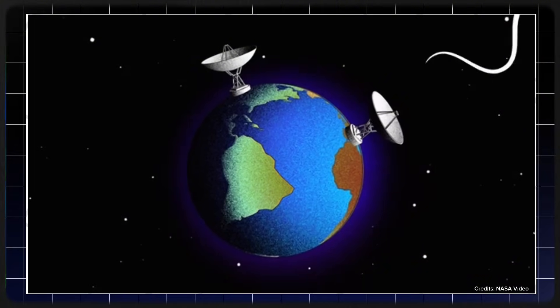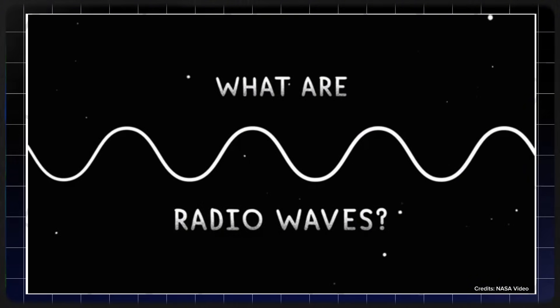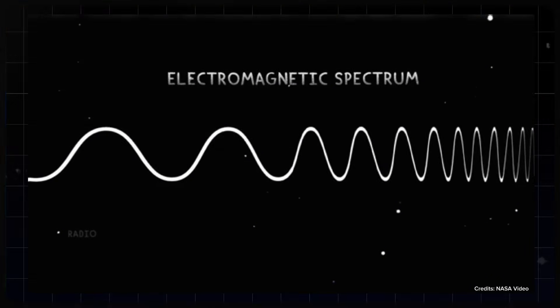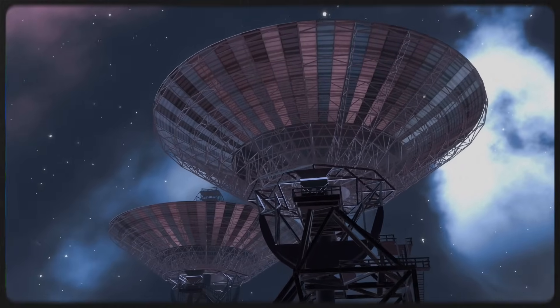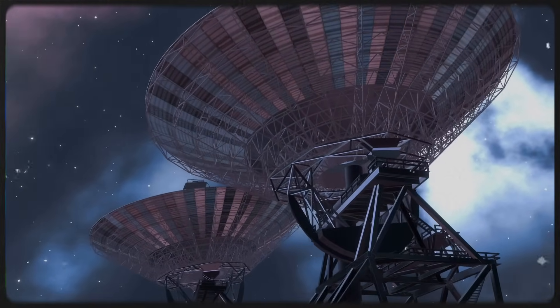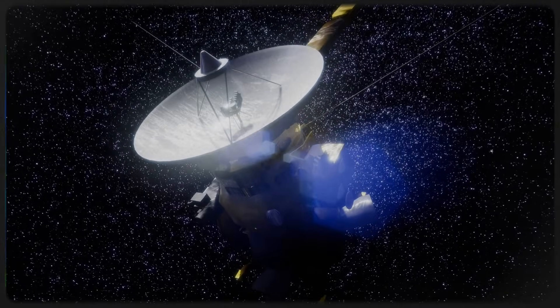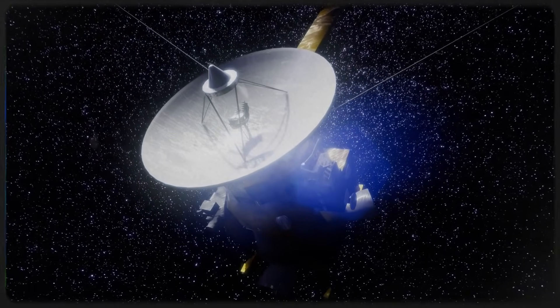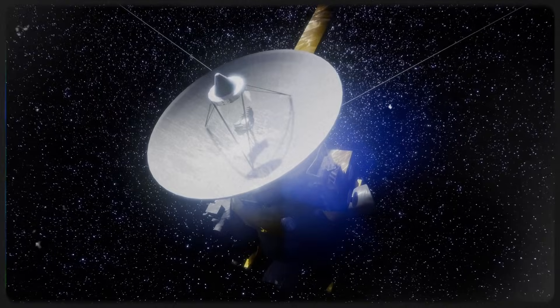Engineers had to proceed cautiously, mindful that sending additional commands could trigger further fault protection responses that might complicate efforts to restore communication. This was a delicate balancing act, as each adjustment took hours to be confirmed due to the light speed delay in communication. After several days of painstaking work, engineers were able to successfully restore contact with Voyager 1 on October 24, 2024.